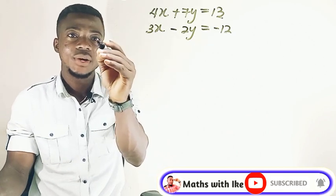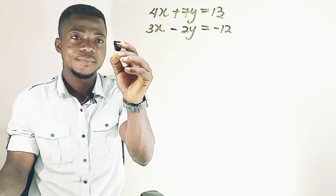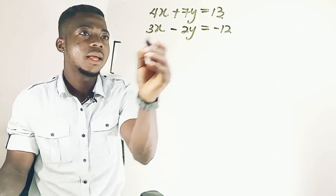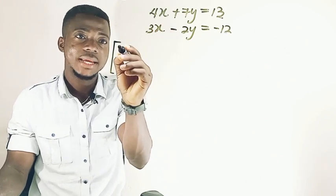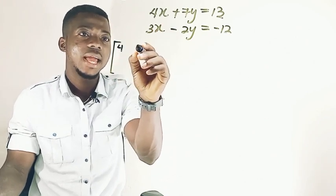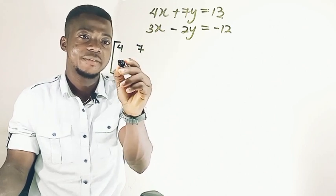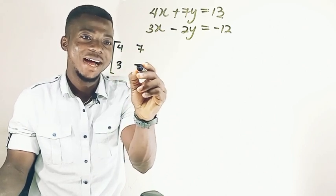So we're going to have the coefficients of x and y, 4 and 7, and we have 3 minus 2.